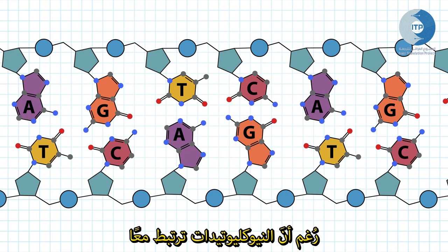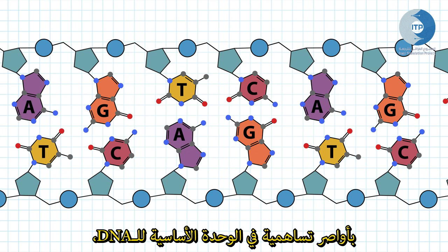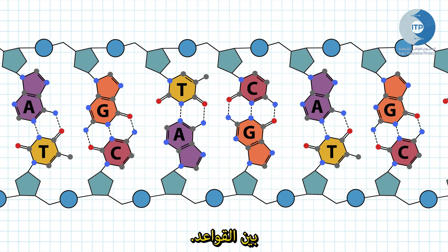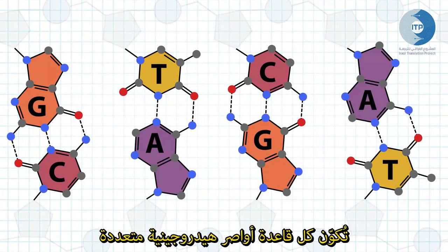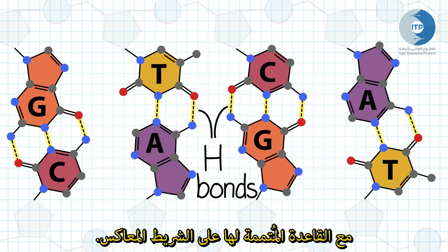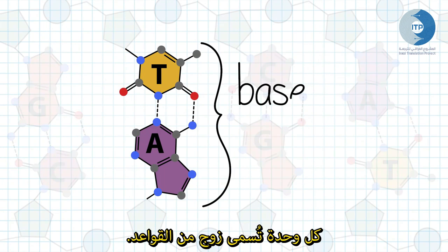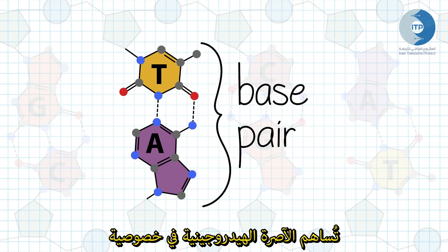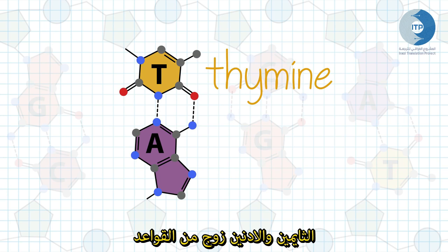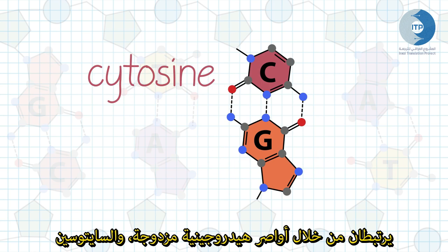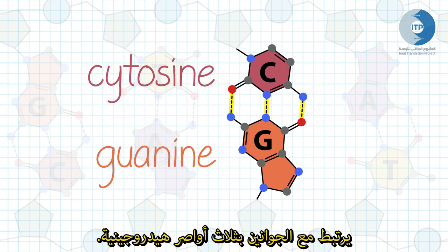Although the nucleotides come together through covalent bonds in the backbone, the two DNA strands interact through non-covalent hydrogen bonds between the bases. Each base forms multiple hydrogen bonds with its complementary base on the opposite strand. Bound together by hydrogen bonds, each unit is called a base pair. The hydrogen bonding contributes to the specificity of base pairing: thymine preferentially pairs with adenine through two hydrogen bonds, and cytosine preferentially pairs with guanine through three hydrogen bonds.